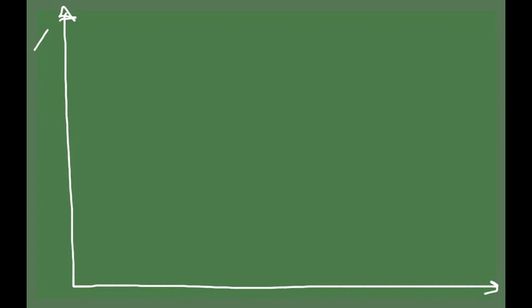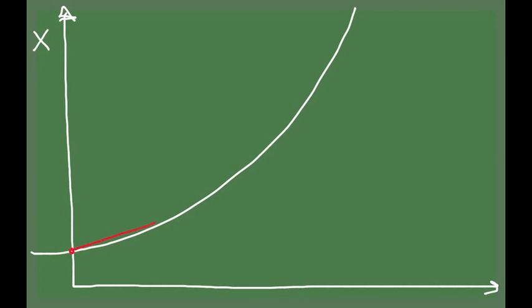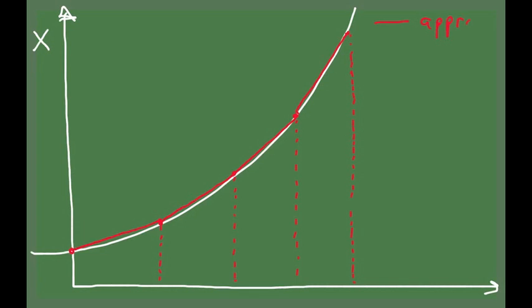I'm going to show you the approximate position versus time function that corresponds to the approximate velocity function, which is a staircase function, and the actual position versus time function. Since we have chosen the velocity in each interval in the specific way I described, the approximate function and the actual function actually coincide at certain points. You can see, therefore, that the approximate function is a pretty good match for the actual function.